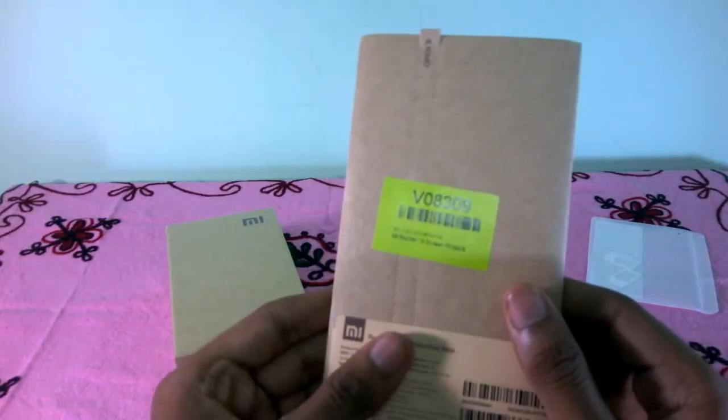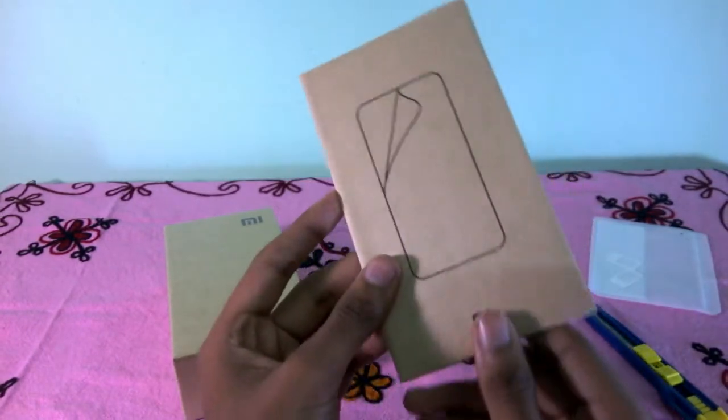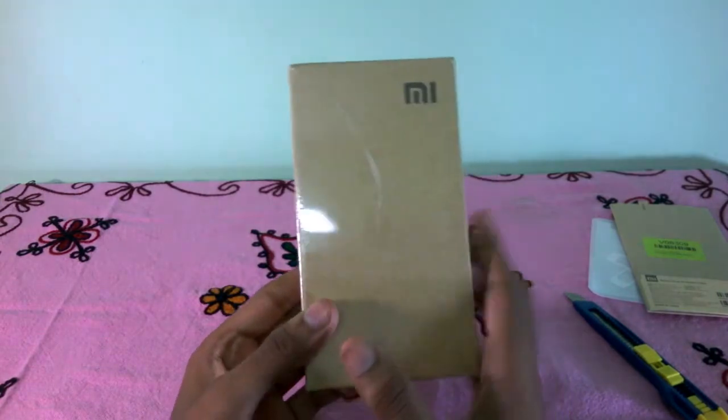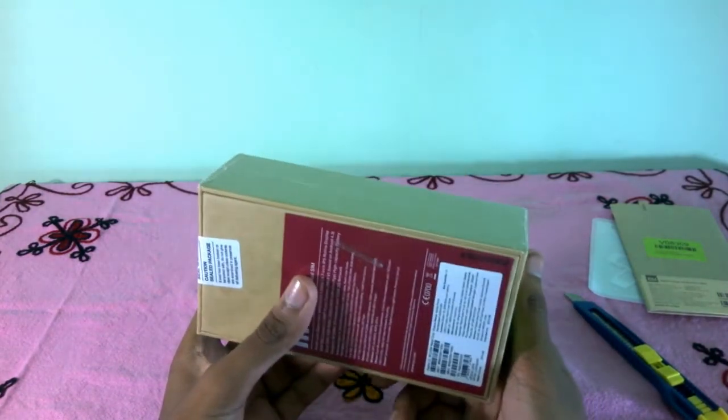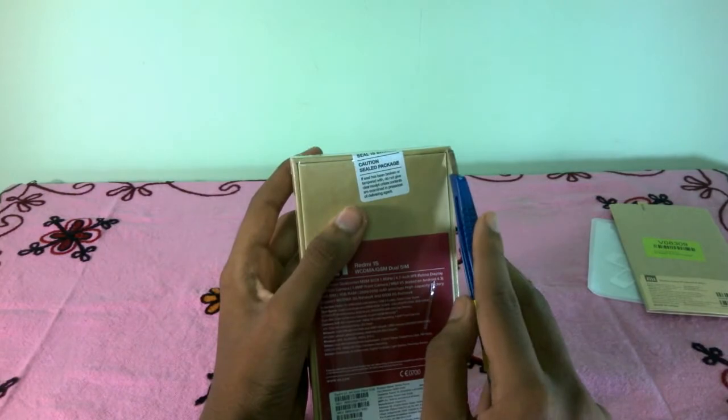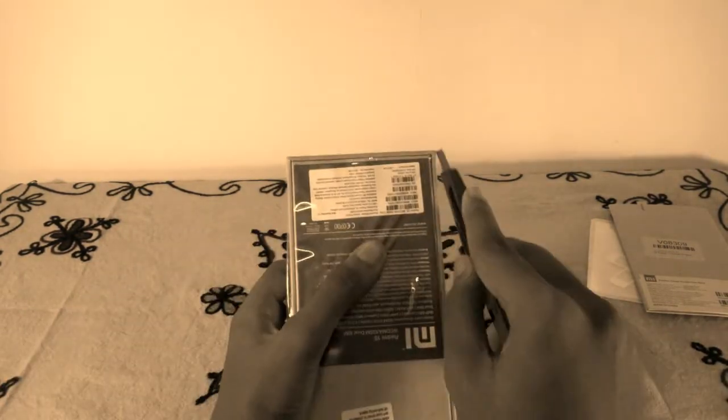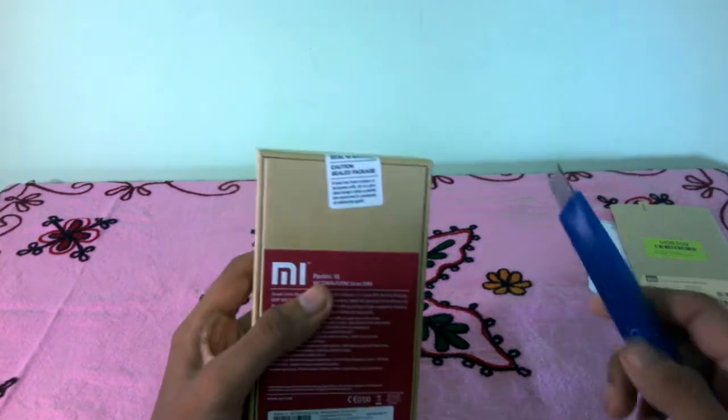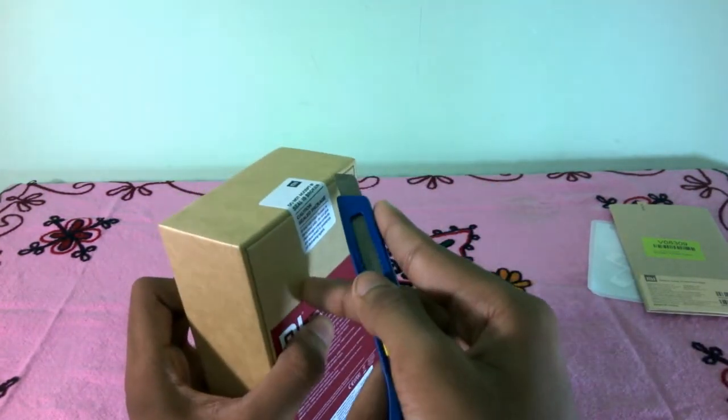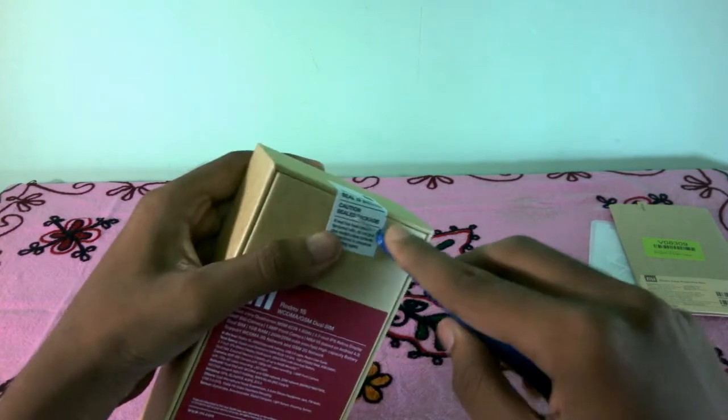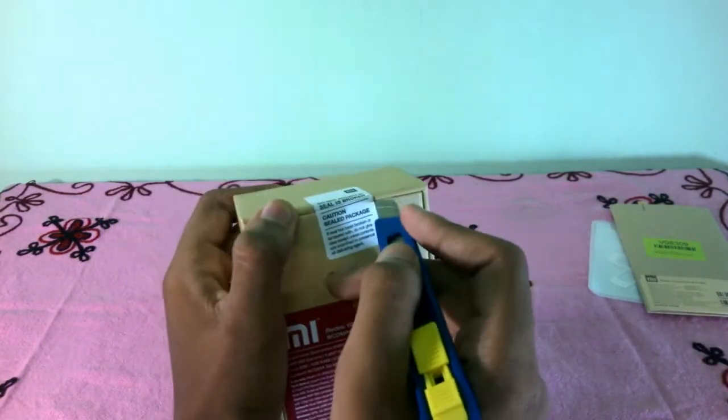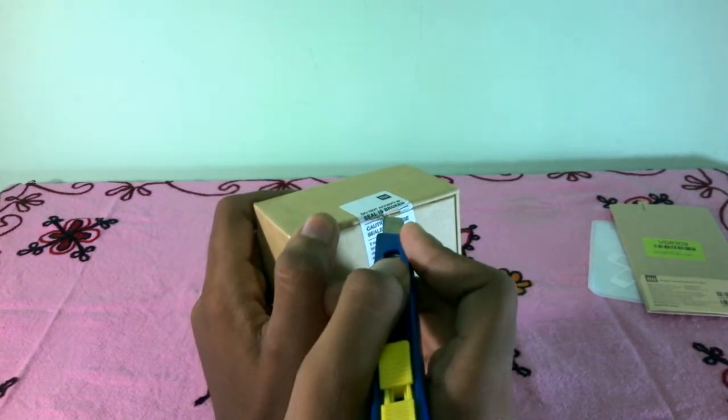Next we have the scratch card, and here is the Xiaomi Redmi 1s box. It looks pretty good, let's unbox it. Also, let me confirm that this phone is running on MIUI, but it's not Android version 4.4, it's running on Android version 4.3. But Xiaomi has promised an upgrade to Android 4.4, so you can be assured.